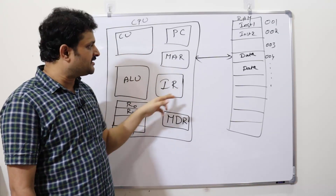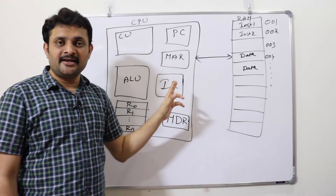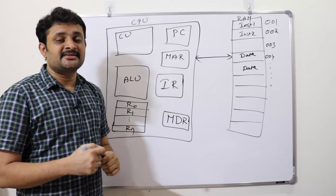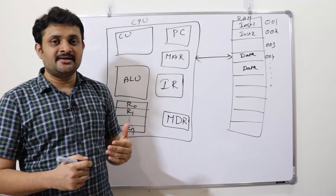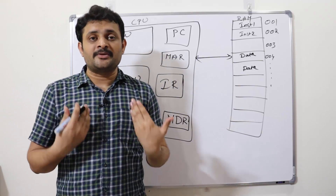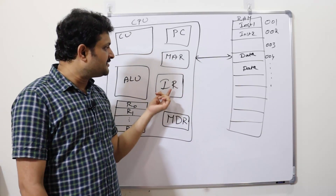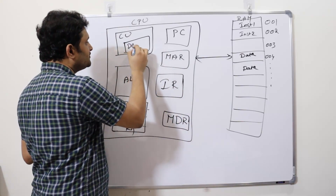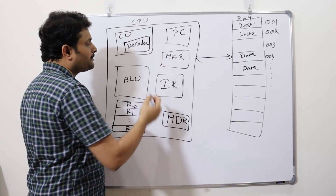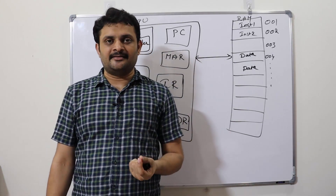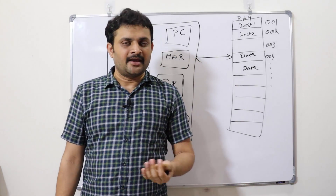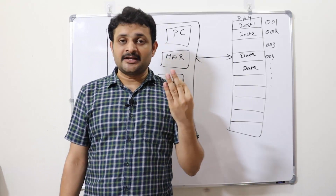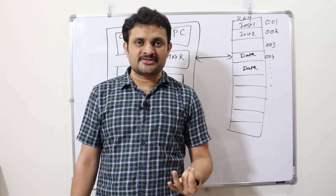One very important module in the control unit is the decoder. The decoder decodes the instruction and identifies what operation needs to be performed. Every instruction has a simple cycle: fetch, decode, and execute. So if you have 10 instructions, each one must go through the same process — fetching, decoding, and execution.